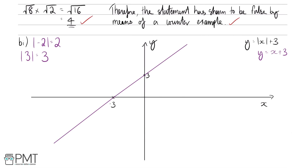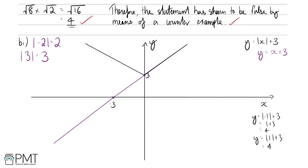Now let's look at y equals mod of x plus 3. When x is minus 1, y equals mod of minus 1, which is 1, plus 3 equals 4 — the same as when x is positive 1. This holds for any negative x: it has the same y value as the corresponding positive x. This means the graph of y equals mod of x plus 3 is a reflection of the left side in the y-axis.